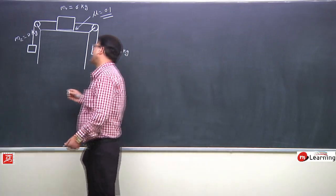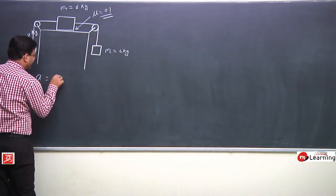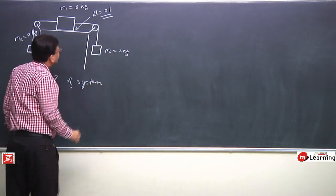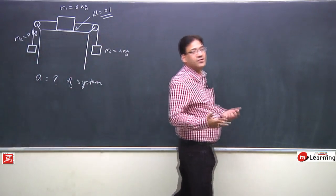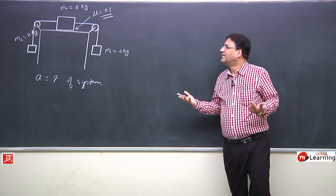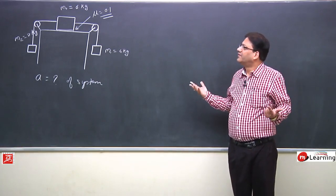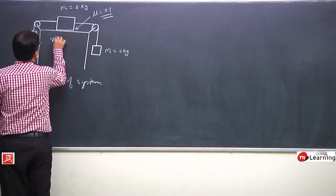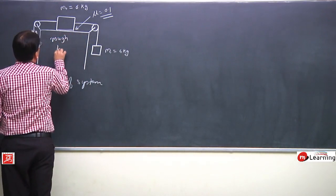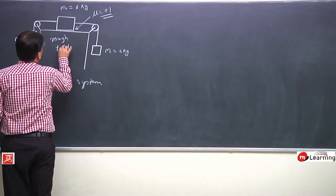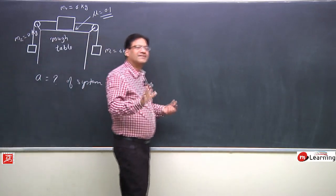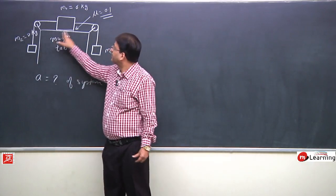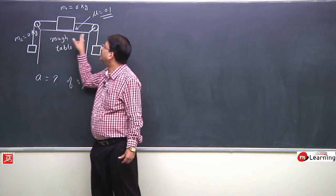Now we are asked: what is the acceleration of this system? In which direction will it be, and how much? This is a rough horizontal table mounted with two pulleys on two ends.